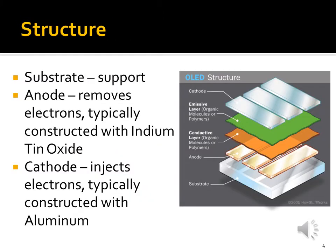Let's take a look at the structure of an organic light emitting diode. As I alluded to in the previous slide, there are many similarities between organic light emitting diodes and regular light emitting diodes. When it comes to the substrate, the anode, and the cathode, they're exactly the same. You have your substrate, which serves as the support of the device. You have your anode, which removes electrons from the conductive layer and is typically constructed with indium tin oxide. Then you have your cathode, which injects electrons into the emissive layer — referring to the diagram on the right. The cathode is typically constructed with aluminum.